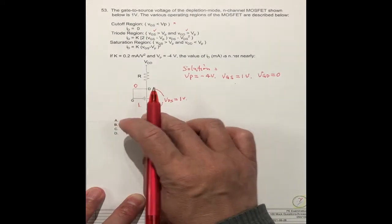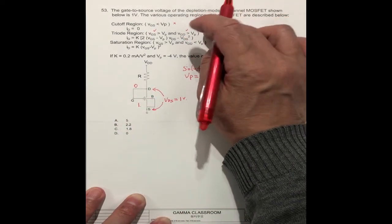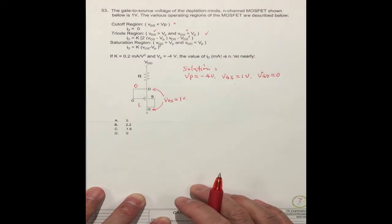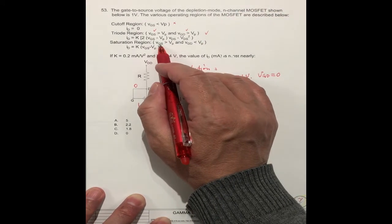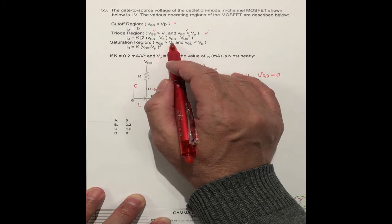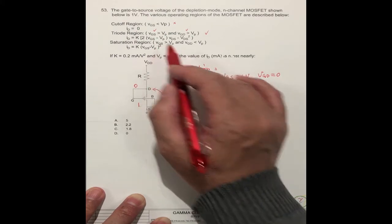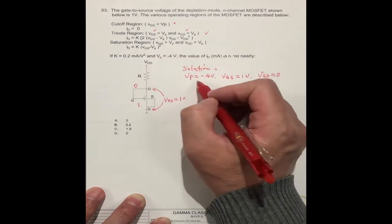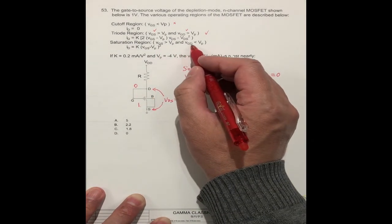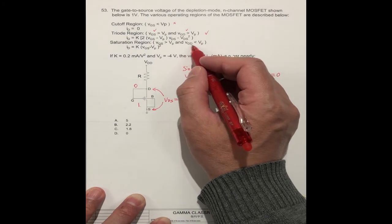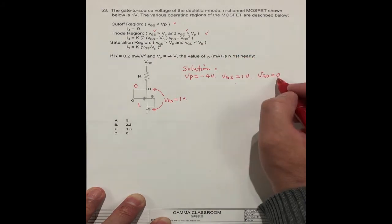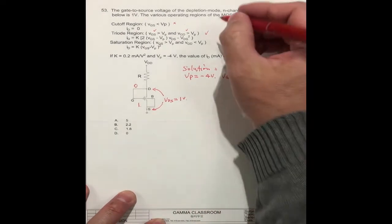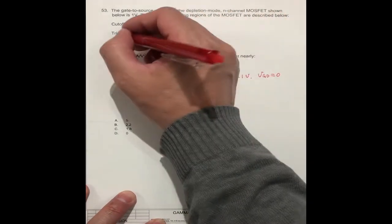So this is operating in this triode region. In this region. You check this one: VGS greater than VP, this is not true. GS, this is true. GS is 1 volt, VP is minus 4. But this one, GD is less than VP, this is not true. GD is 0, VP is minus 4. So we know this is in this region.